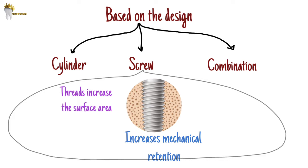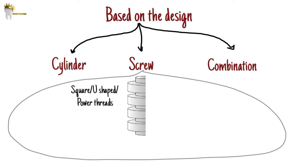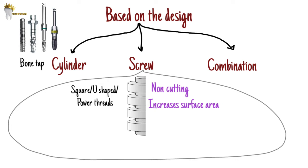Implants have different thread designs. The square or U-shaped, also called power thread design, features non-cutting threads. These threads increase the surface area of the implant, which increases its primary stability in the bone. The disadvantage is that you need a thread former, also known as a bone tap, to make threads in the bone before placing the implant.